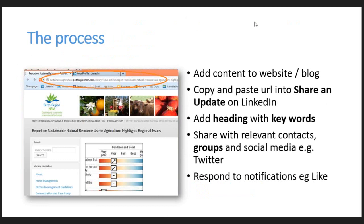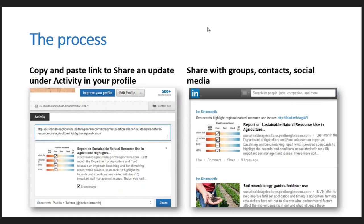The first step is to add content to the website. Here I've just added a recent report on sustainable natural resources in agriculture in WA. We add the content to the website — you could use a blog or some other knowledge repository. We then copy and paste the URL into a share and update on LinkedIn. I've taken the URL and pasted it into my profile under Activity.